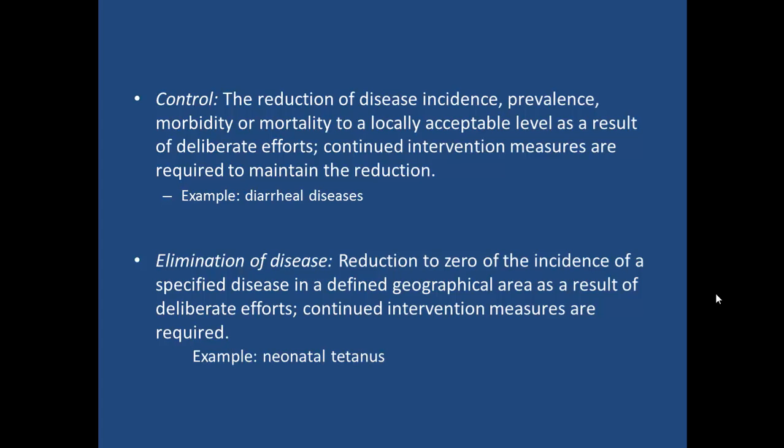The first thing you need to understand is the differences between the different levels of disease control and elimination. Control is probably the least measured of all the different programs. If you're doing a control program, all you're trying to do is reduce the disease incidence, prevalence, and morbidity to an acceptable level as a result of deliberate efforts. These can be things like vaccination programs for diseases like papillomavirus, as well as diarrheal diseases. A lot of these diseases have environmental factors that make it difficult to get beyond just a control level.